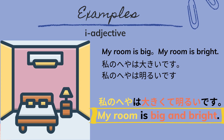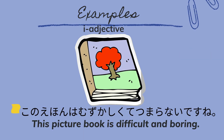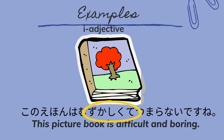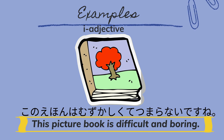Which means: 'My room is big and bright.' Our next example is 'Kono ehon wa muzukashikute tsumaranai desu ne,' meaning 'This picture book is difficult and boring.' We connected 'muzukashii' and 'tsumaranai' using Te-form.